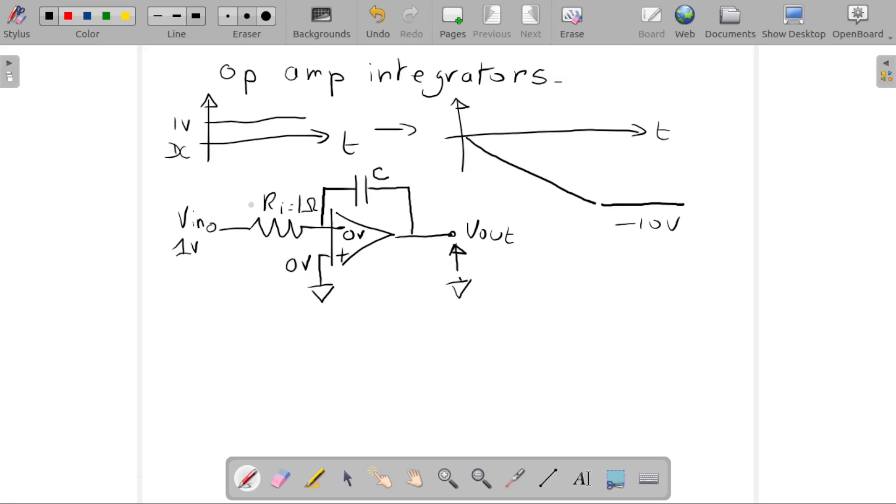Which means that the current is always here—it doesn't go in there. So the current is basically going through the resistor and the capacitor. There's nothing going inside the op amp. Here we can compute the current, the intensity, using Ohm's law.